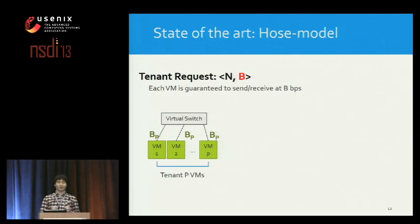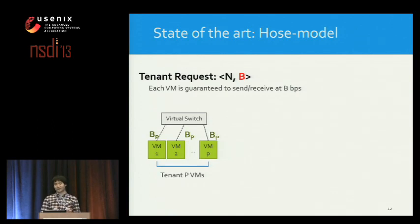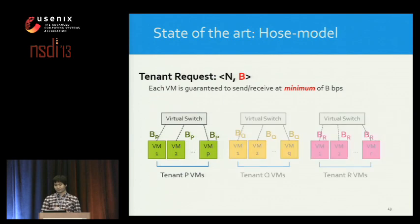We start from the state-of-the-art called the host-model, which provides an illusion that all VMs of a tenant are connected to a virtual switch with capacity B on each link. So a tenant asks for a number of VMs and a capacity B, and each VM can send and receive at a rate of B. This model is the most popular approach in today's research. Our model additionally allows tenants to use more bandwidth when there is spare capacity, providing high utilization while still guaranteeing minimum bandwidth.